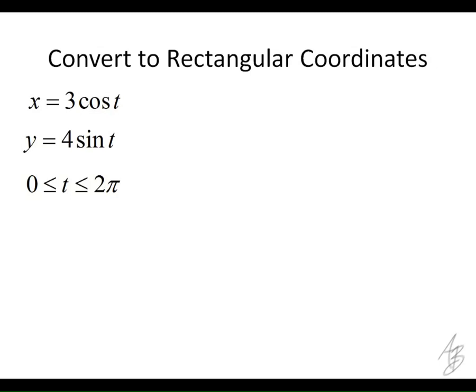So in the last example we had 2 cosine of t and 2 sine of t, and we end up with a circle. So what if these coefficients are different? What do you think that's going to do?